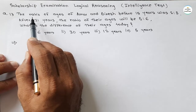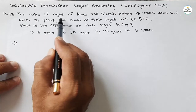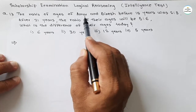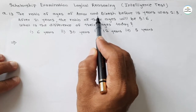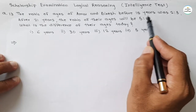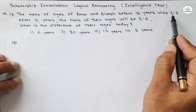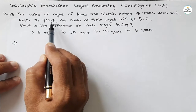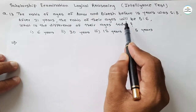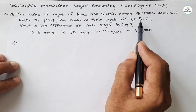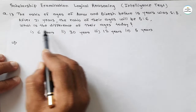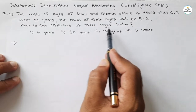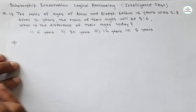The question is: the ratio of ages of Amar and Dinesh before 15 years was 2 to 3. After 21 years, the ratio of their ages will be 5 to 6. What is the difference of their ages today?